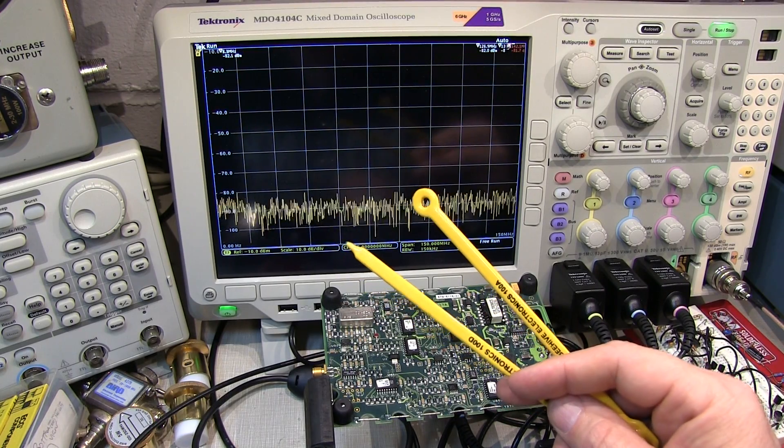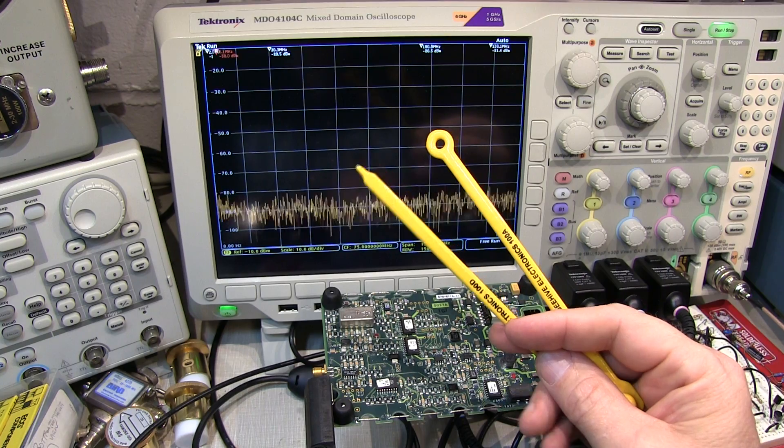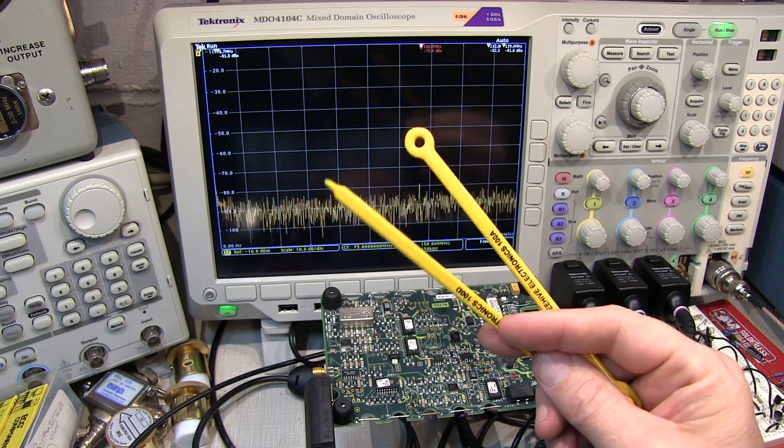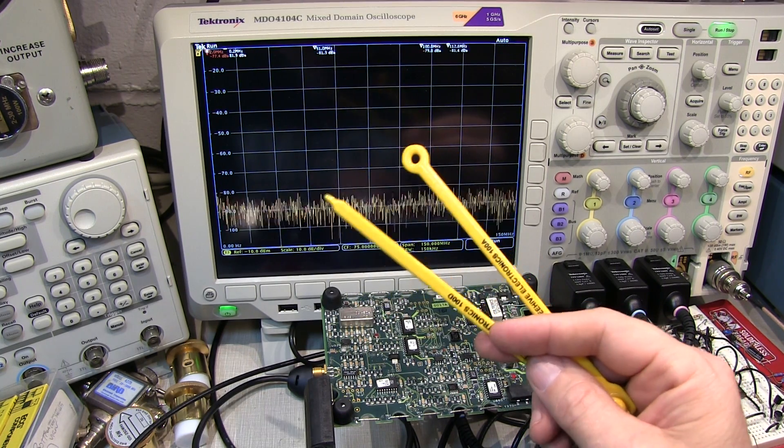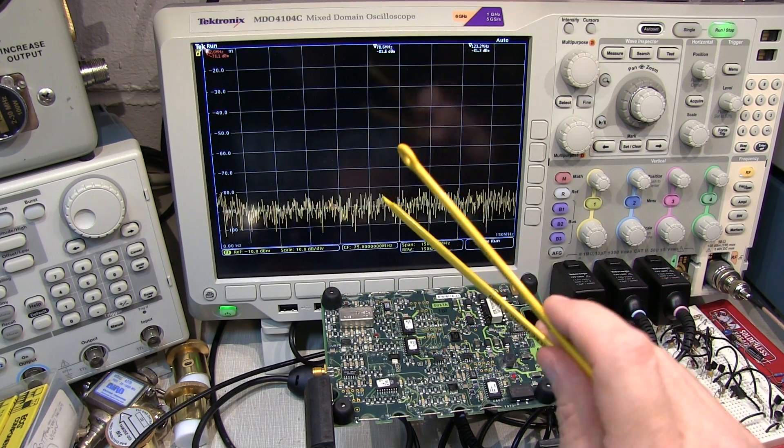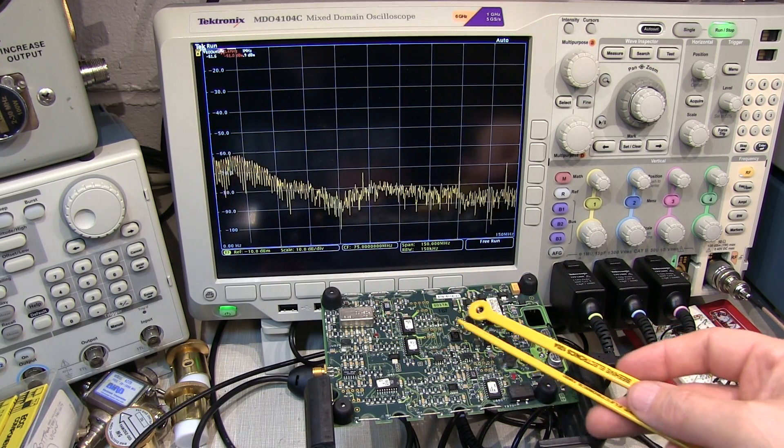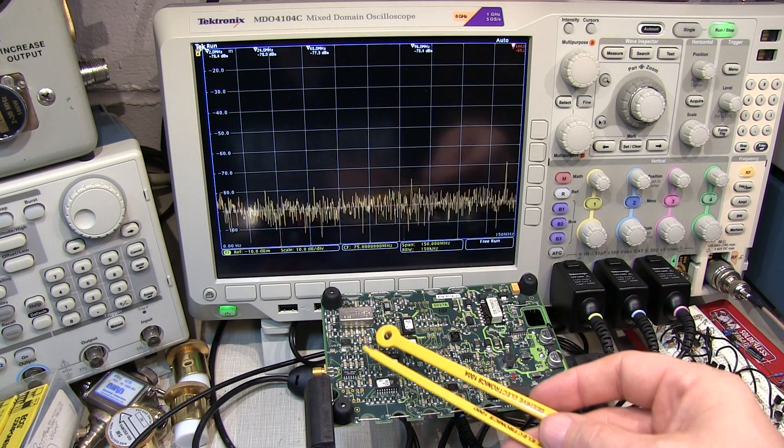I hope you learned a little something about the differences between the different types of near field sniffer probes, the E field probe and the H field probe, what each of them responds to, and how you might use them to help locate a source of offending emissions, and how the measurements made in the near field might relate to measurements that are made in the far field with an antenna.